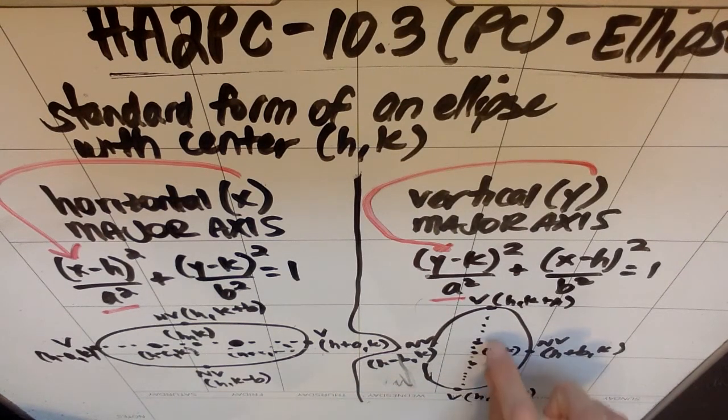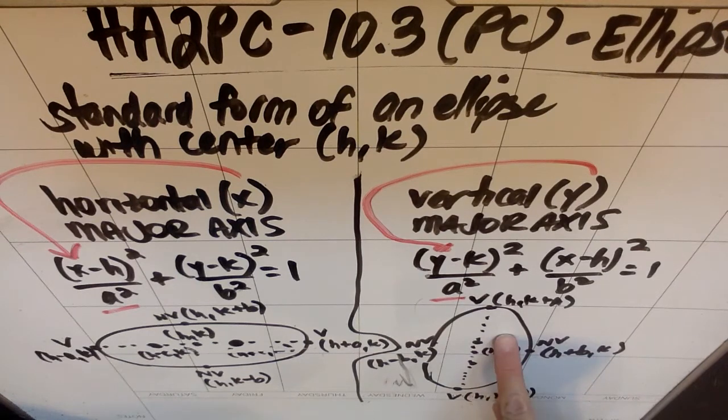And then these foci, which I didn't squeeze on there because I was a little bit out of space, but again similar to the way the vertices work, it would be h comma and then k plus c because from k I went up c units, and then k minus c would be the y coordinate here.